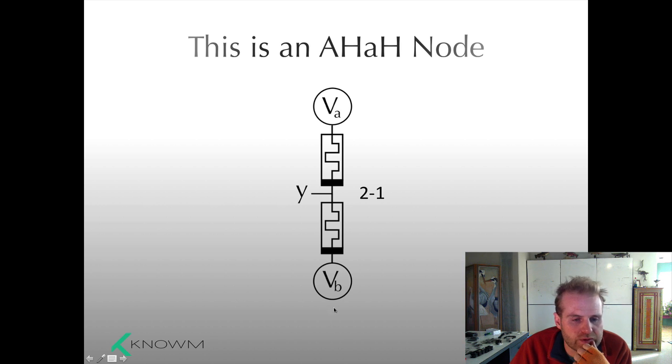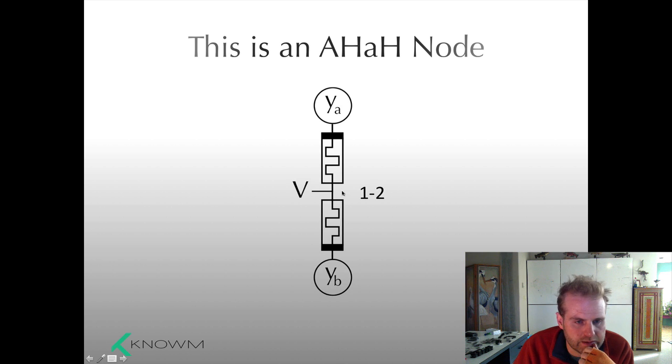So this could be plus 1 volt, this could be minus 1 volt, and then you extract your output here Y. So this is the 2-1 configuration and this is polar because we have the bars.